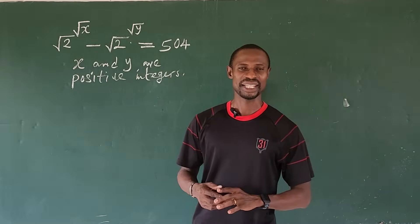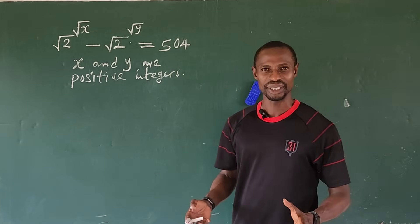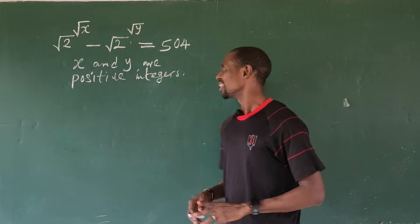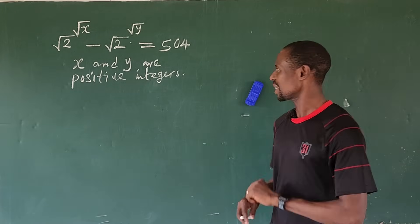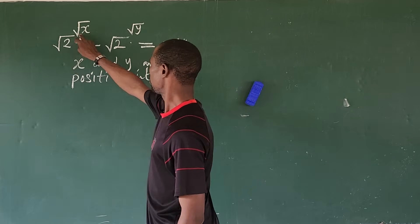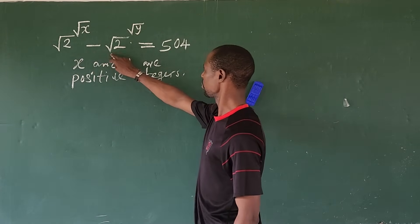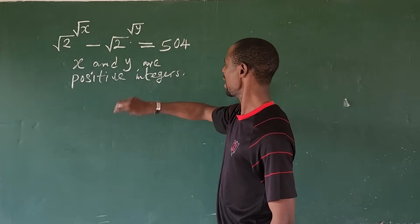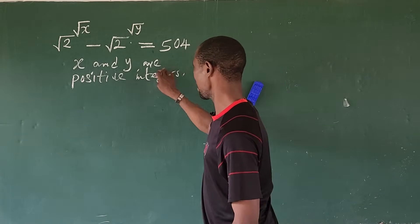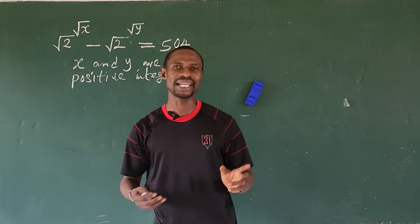Hello everyone, welcome to our live Maths TV. Today we have a challenge on the board: an exponential equation in algebra. The question is: the square root of 2, all to the power of square root of x, minus the square root of 2, all to the power of square root of y, equals 504. X and y are positive integers — how do we solve for x and y that satisfy this equation?